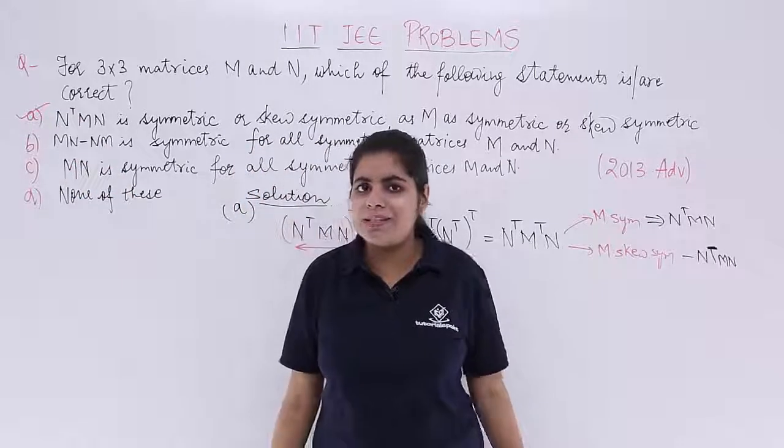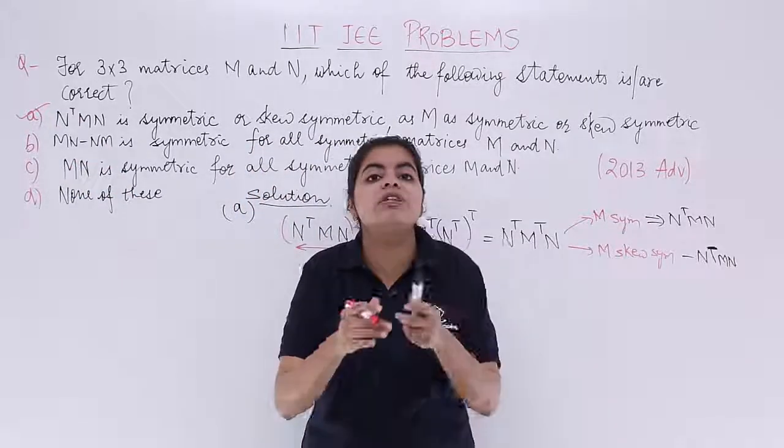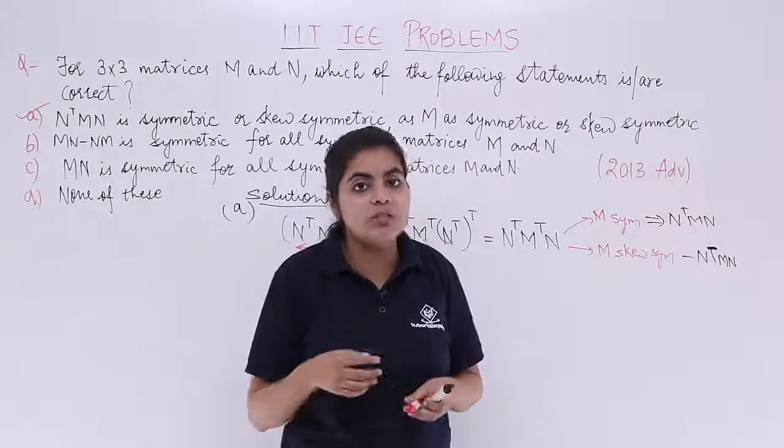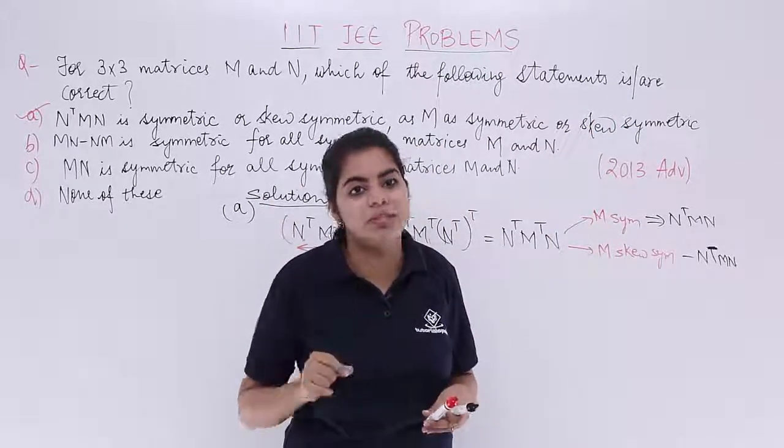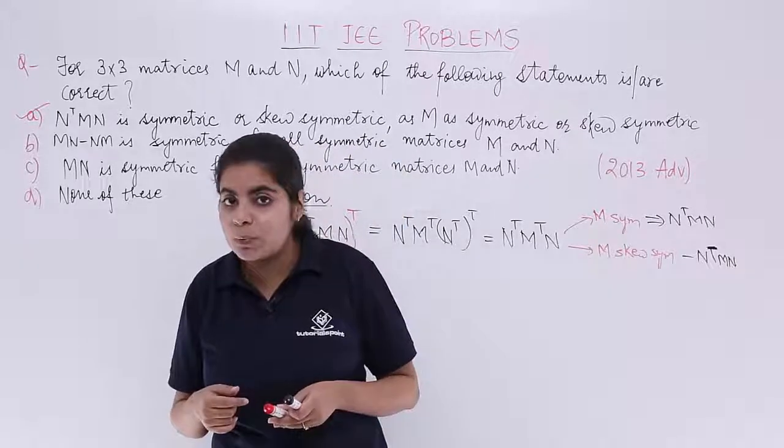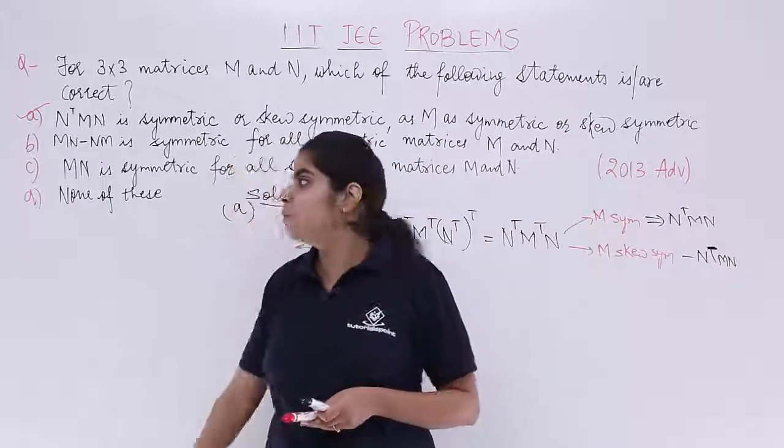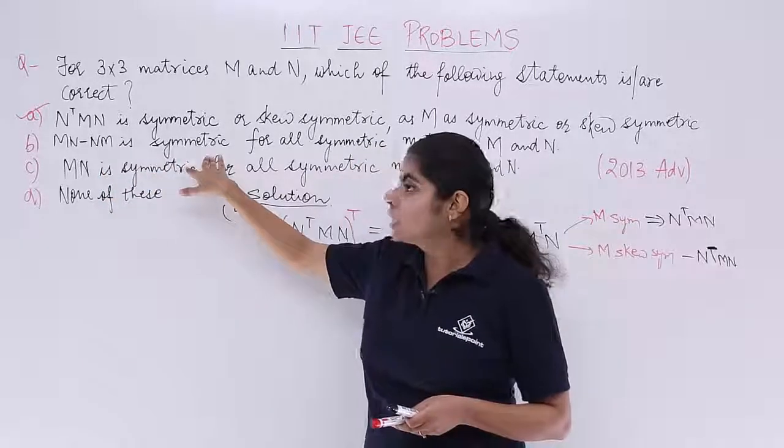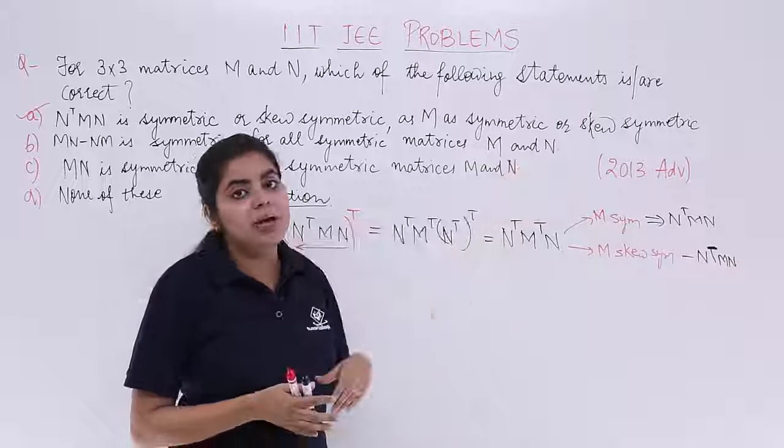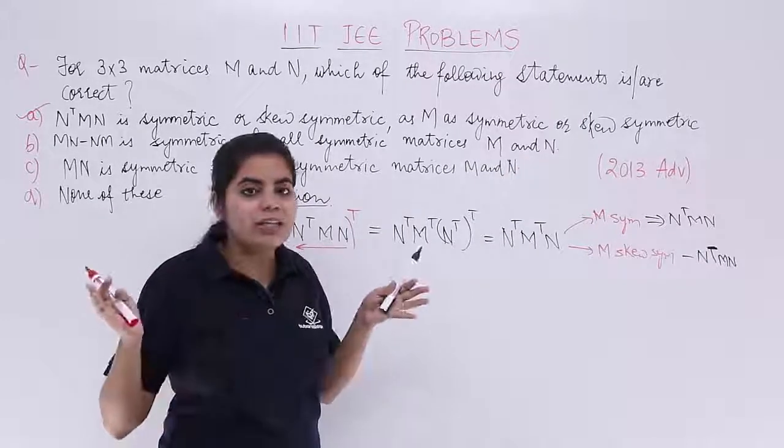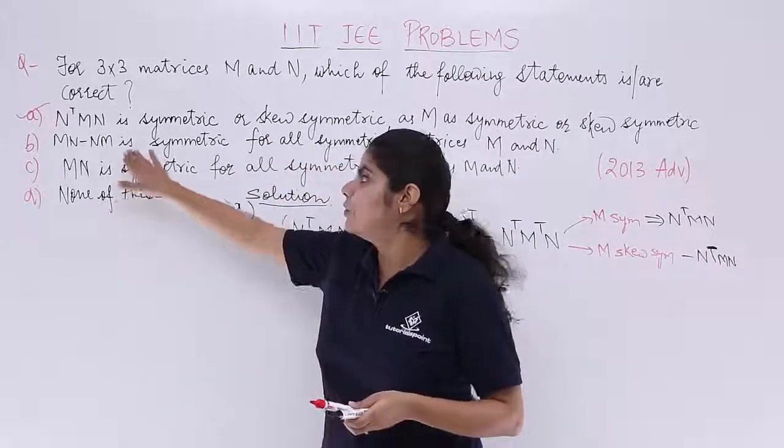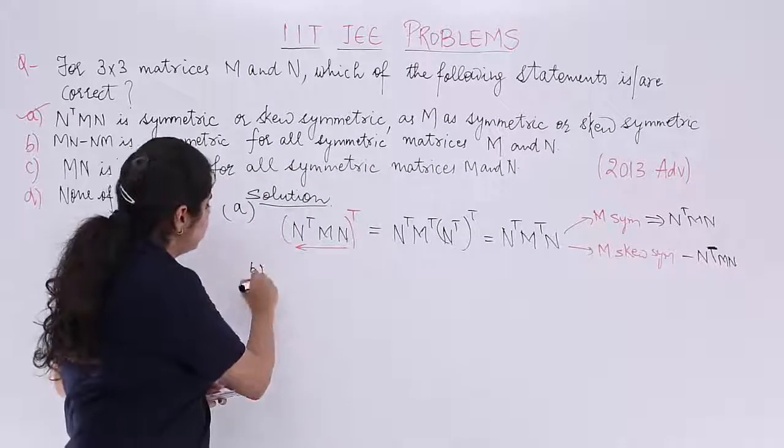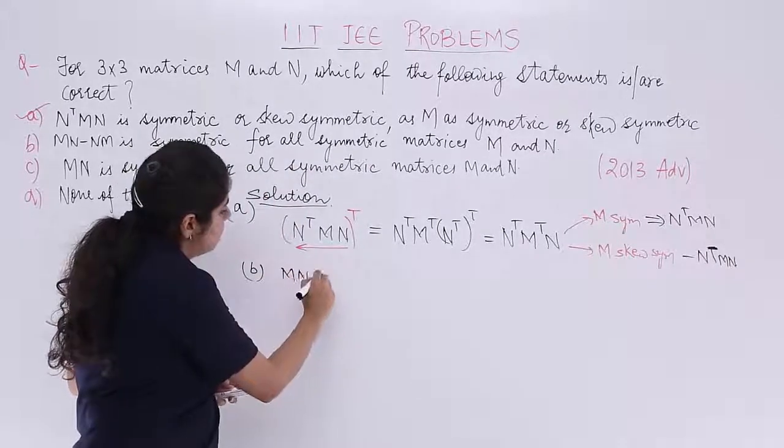But can we stop our answer here? No, we cannot. Because we need to show which of the options is or are correct. It is a multiple choice question wherein multiple correct options are possible. So let's go with the second option now. The second option is option number B. It says that MN minus NM is symmetric for all symmetric matrices M and N. Let's write it option number B, MN minus NM.